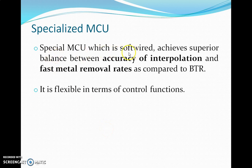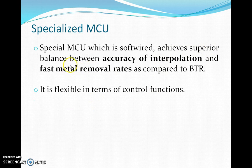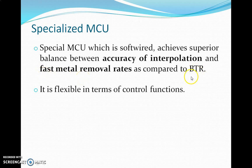The special MCU is a soft-wired system, meaning there are very few electronic devices or printed circuit boards, and it can be controlled with software. It offers a superior balance between accuracy of interpolation and fast metal removal rates compared to BRT. Not only straight lines and circular functions, but also helical, spherical, and cubic interpolation functions can be performed, making this MCU very flexible in terms of control functions.